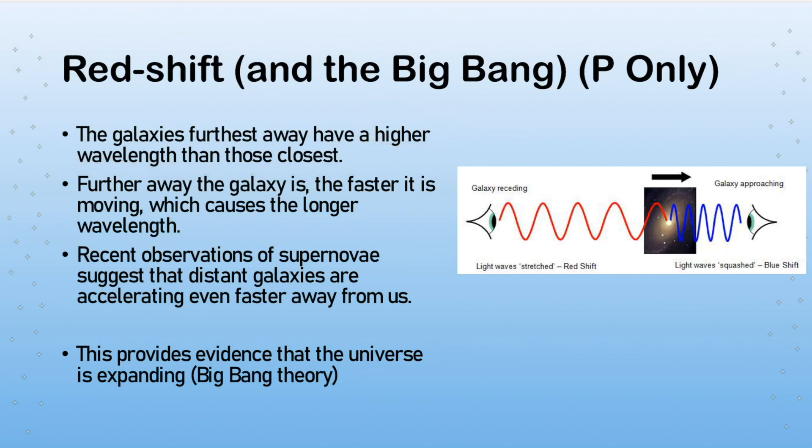The furthest away galaxies have a higher wavelength than those that are closest, which shows us that those are moving away from us. The further away the galaxy is, the faster it's moving, because they have this longer, higher wavelength. So it shows us that those ones are actually traveling even faster than the ones that are closest to us. Recent observations of supernovae actually suggest that the distant galaxies are accelerating even faster away from us. So not only are they moving away from us in the first place and they're moving away quickly, they're actually accelerating away from us. All this idea that things are moving away from us, the direction of redshift, the evidence of redshift explains that things have moved away forever.